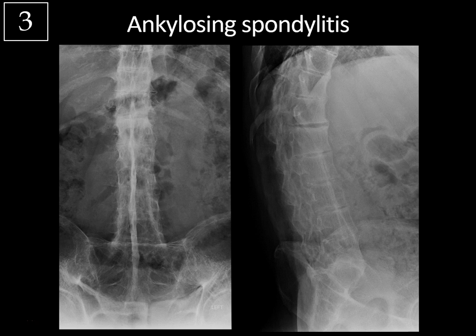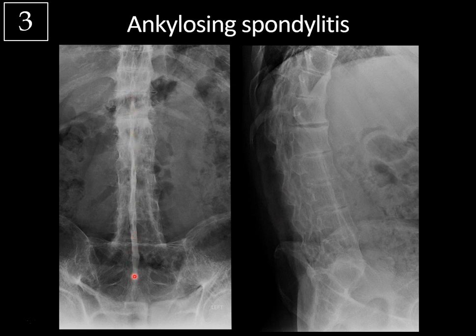Once the spine gets involved, the vertebral bodies start to square off in shape. You can also get sclerosis and erosions at the corner of the vertebral bodies — known as the shiny corner sign or Romanus lesions. These patients often form syndesmophytes, perivertebral ossification running parallel to the spine, which when severe gives the appearance of a bamboo spine. Striking in this case is ossification of the intraspinous ligament, visible laterally. Normally there's space between the spinous processes, but the ligaments are completely ossified, giving the appearance of a dagger sign.